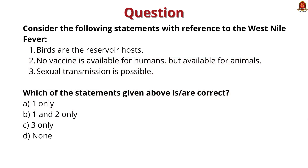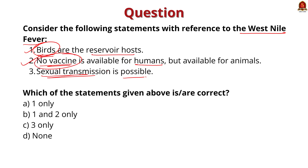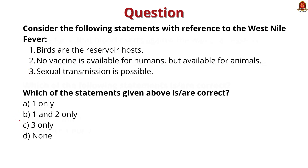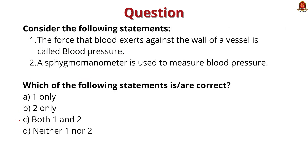Now we have the prelims practice question discussion. Consider the following statements with reference to West Nile fever: birds are the reservoir host; no vaccine is available for humans but is available for animals; sexual transmission is possible. Statement 1 is correct — birds are the reservoir host. Statement 2 is also correct — a vaccine is not available for humans. Statement 3 is incorrect — human-to-human transmission through sexual contact is not documented. So the correct answer is option B — 1 and 2 only.